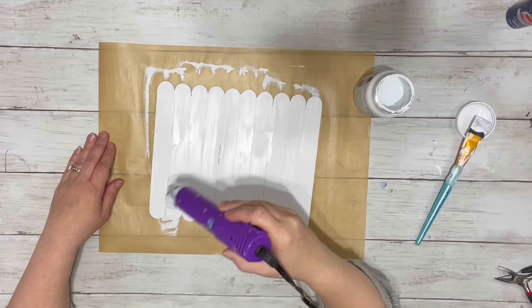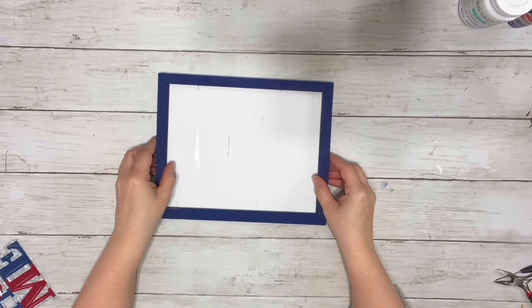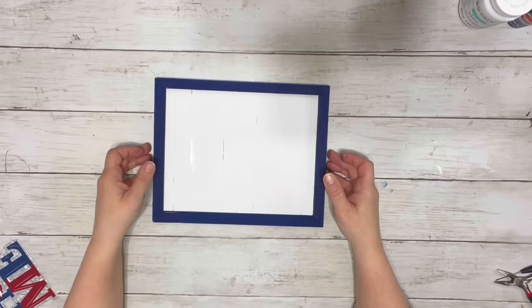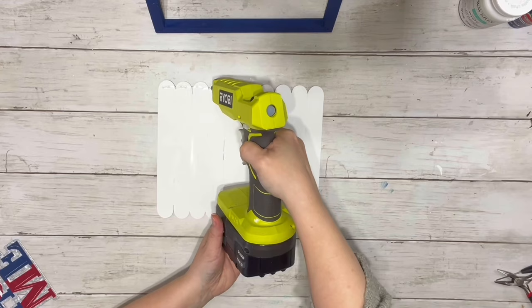And once everything was dry, I took the frame and placed it over the painted popsicle sticks and just kind of lined it up to see where I needed to put the hot glue. I hot glued all around the popsicle sticks on the very edge and then placed that frame right down on there and let that dry.